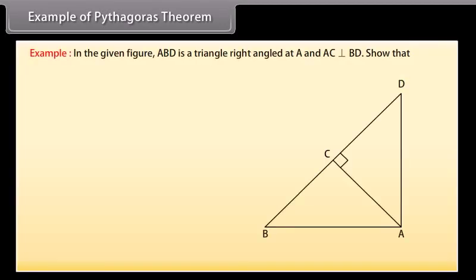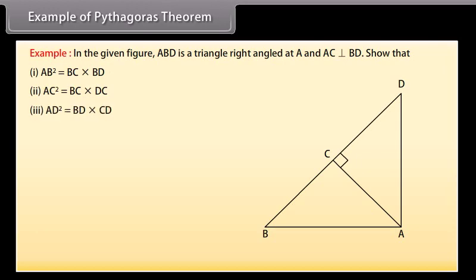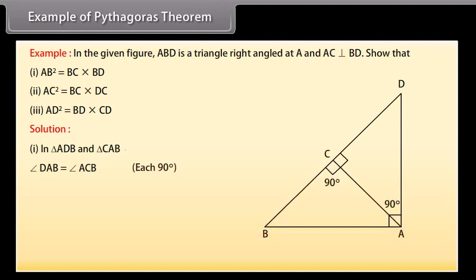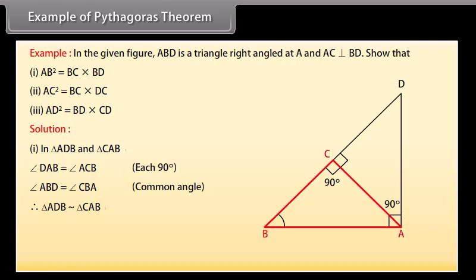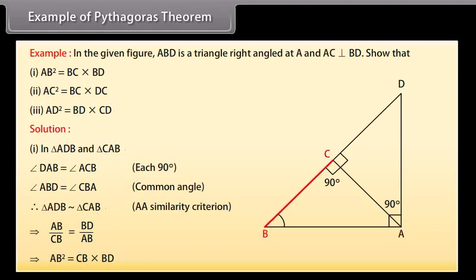In the given figure, ABC is a triangle right angled at A and AC is perpendicular to BD. Show that: 1. AB² = BC·BD. 2. AC² = BC·DC. 3. AD² = BD·CD. Solution: 1. In triangles ADB and CAB, angle DAB = angle ACB (each 90°), angle ABD = angle CBA (common angle). Therefore, triangle ADB is similar to triangle CAB by AA similarity criterion, which implies AB² = CB·BD.